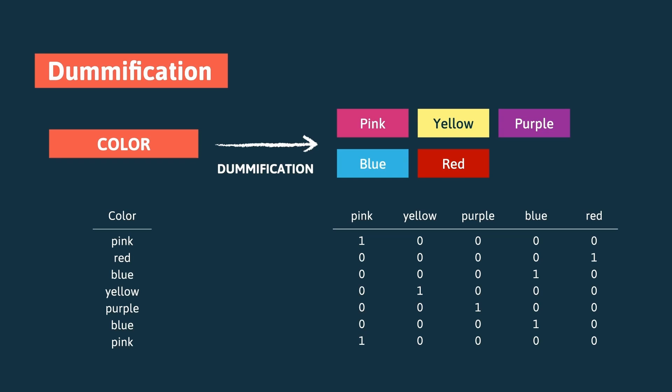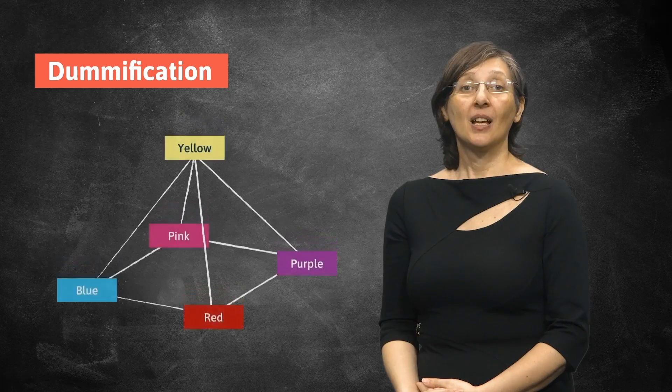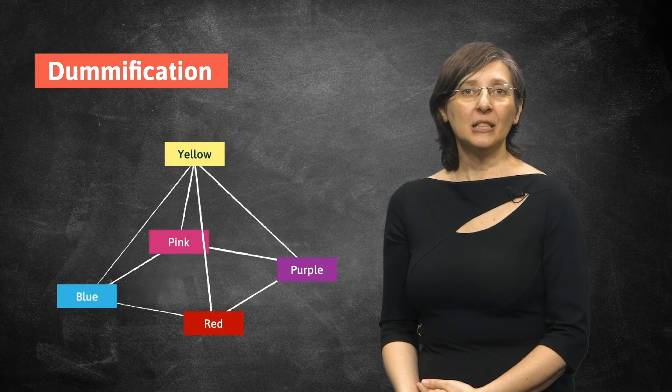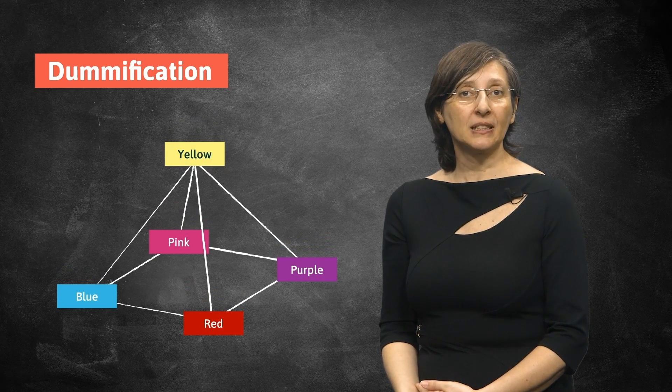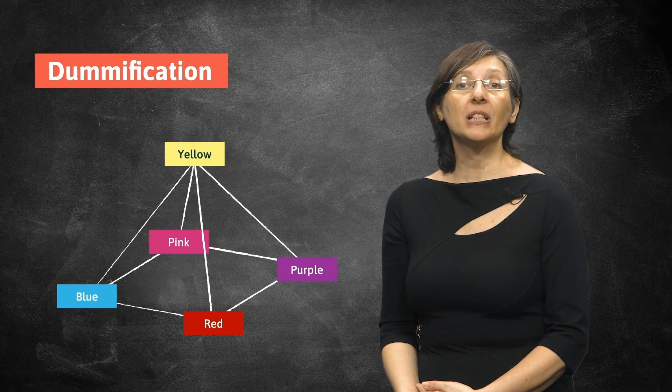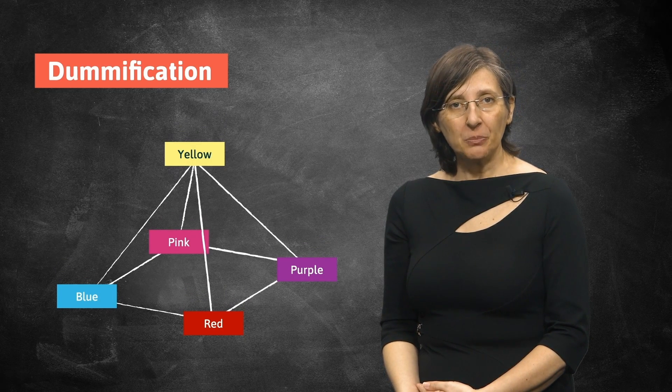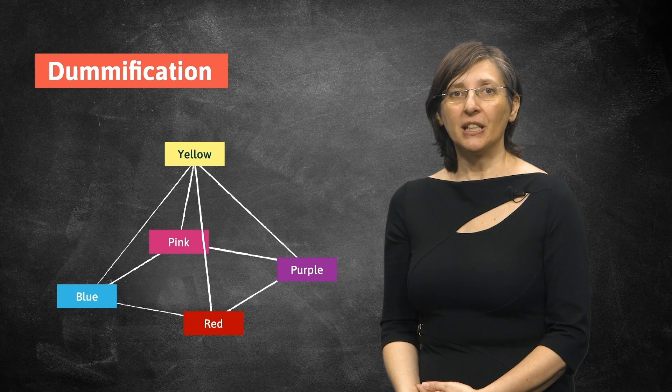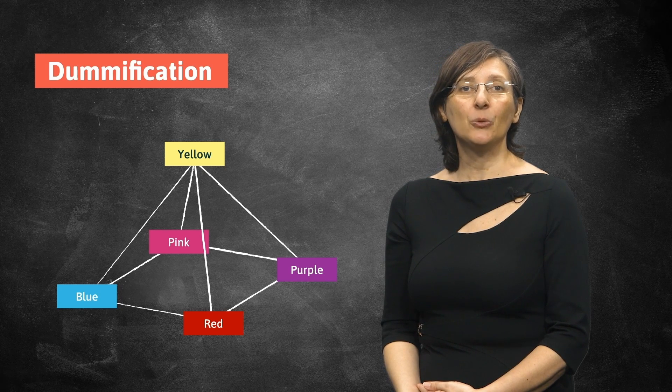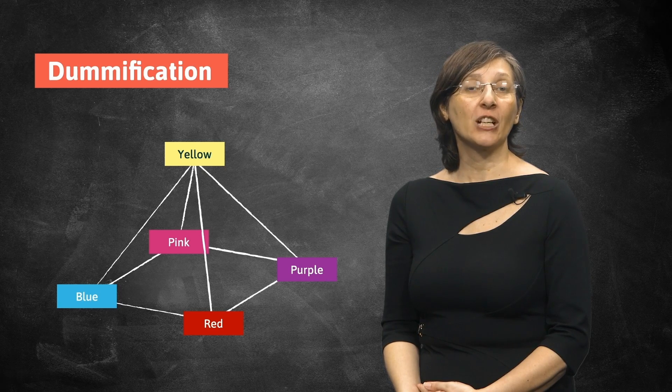For the red flower, all but the red variable receives zero and so on. Note that now the distance between any two colors is fixed and all the colors become equally distant. If you measure the distance between a pink and a blue flower, it will be equal to the distance between a red and a purple one, for example.